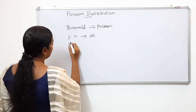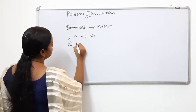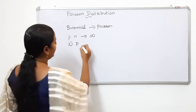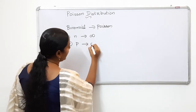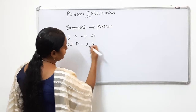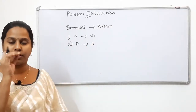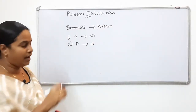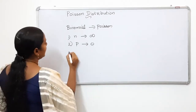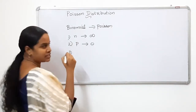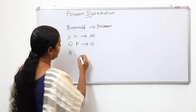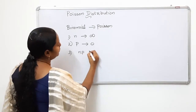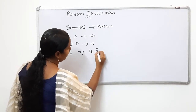The probability of success is P. This P is a finite problem, as it approaches 0. So the value of Np is finite. That is the binomial distribution condition.